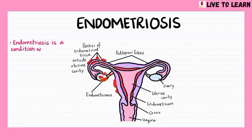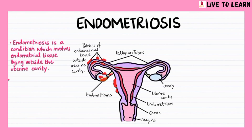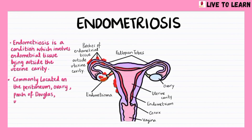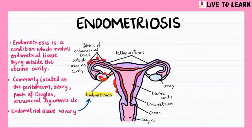Endometriosis is a condition which involves endometrial tissue lying outside the uterine cavity. In endometriosis, the endometrial tissue is commonly located on the peritoneum, ovary, the pouch of Douglas, and the uterosacral ligaments. When endometrial tissue is implanted into the ovary, an endometrioma forms.